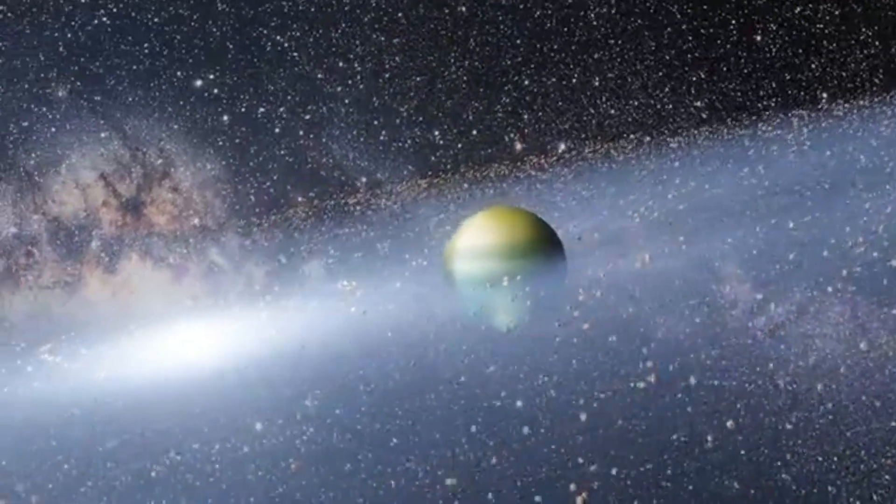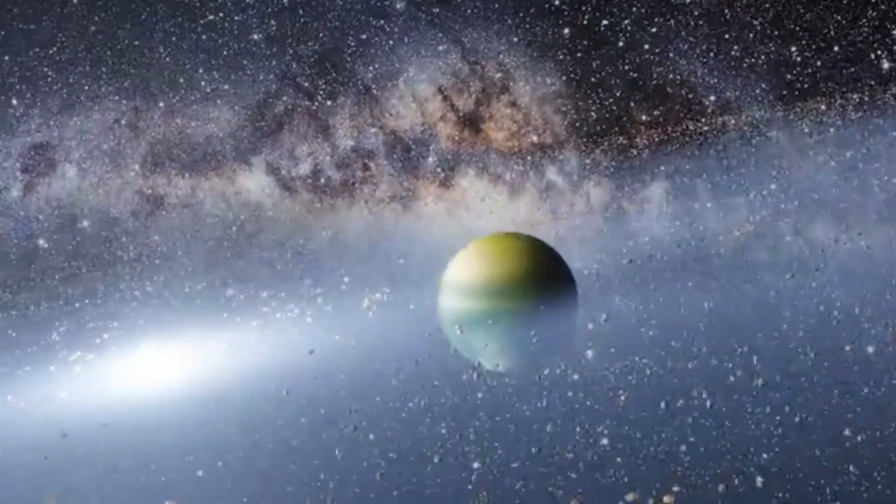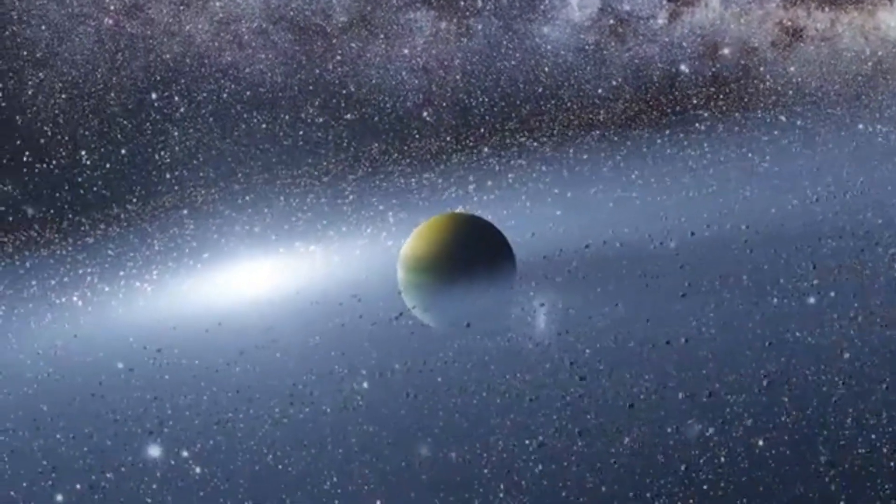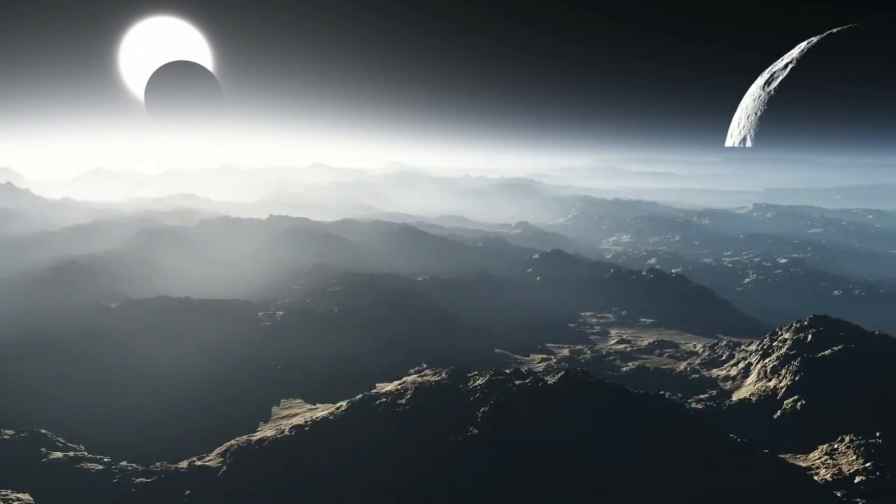Excitingly, K2-18b orbits within its star's habitable zone, suggesting the potential for liquid water if present on its surface, a key factor in the search for extraterrestrial life.